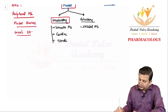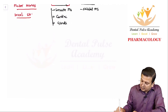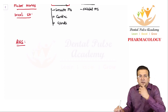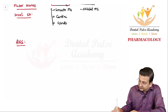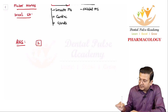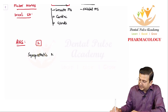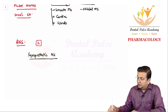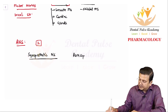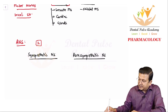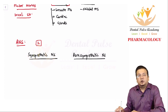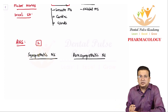The autonomic nervous system is mainly divided into two parts — two main divisions. These are called the sympathetic nervous system and, opposite to sympathetic, the parasympathetic nervous system. So sympathetic and parasympathetic are the two parts of the autonomic nervous system.